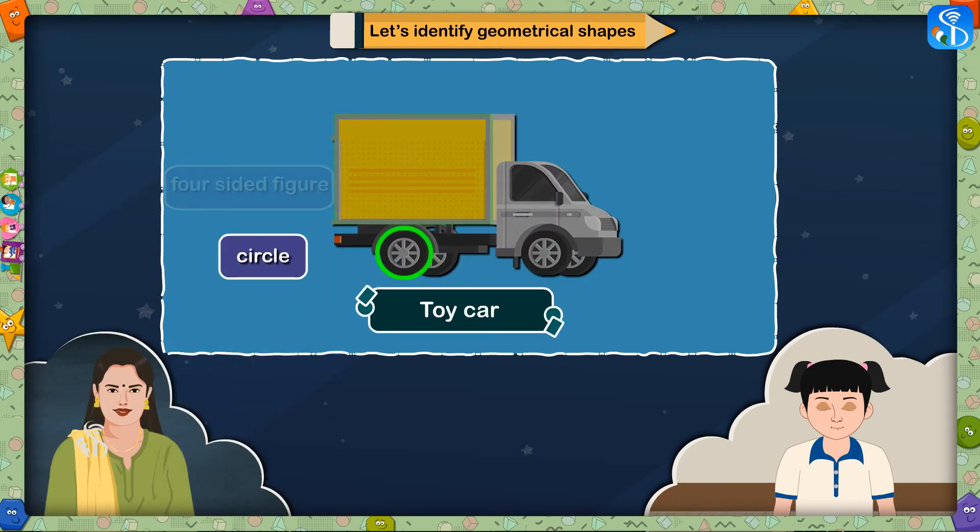If we take a toy car, we can see many shapes like circle, four-sided figures, and so on.